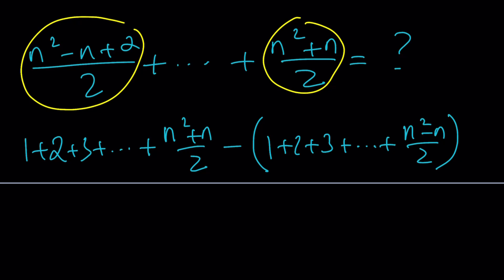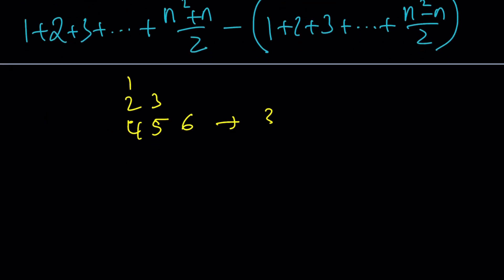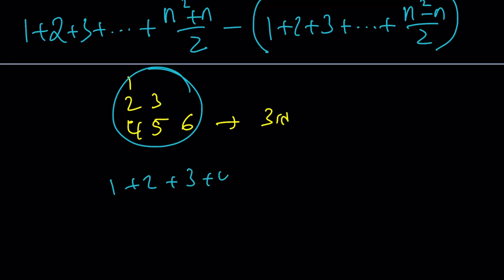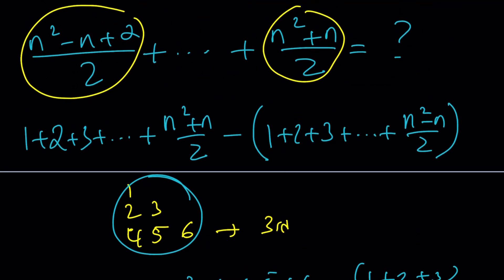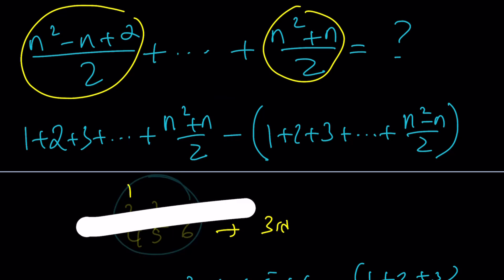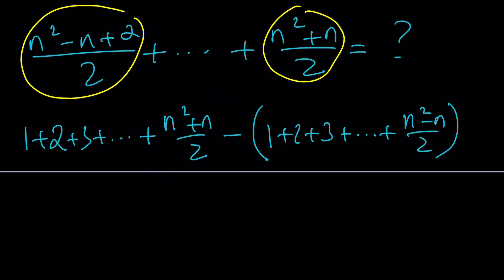To clarify the subtraction approach: if you're finding the sum of numbers in the third row, find the sum of all numbers 1 through 6, then subtract 1 + 2 + 3. That gives you 4 + 5 + 6. That's the idea — the big sum minus the numbers you don't want, where the cutoff is the last number in the (n−1)th row, which is (n²−n)/2.